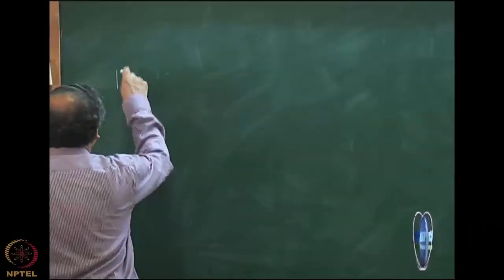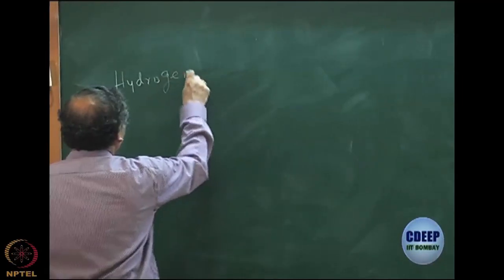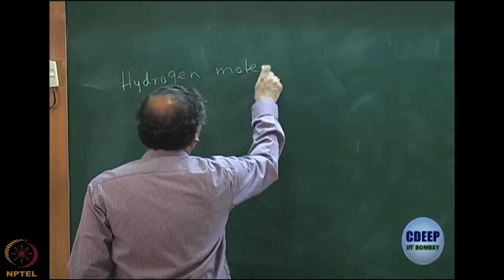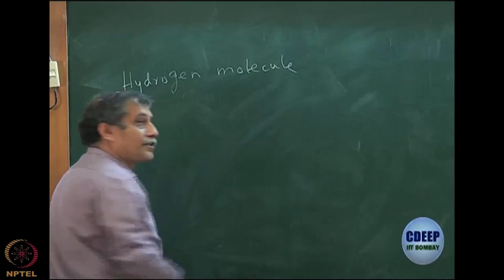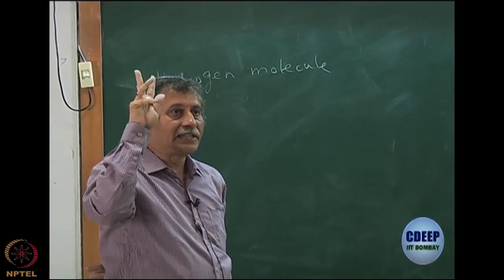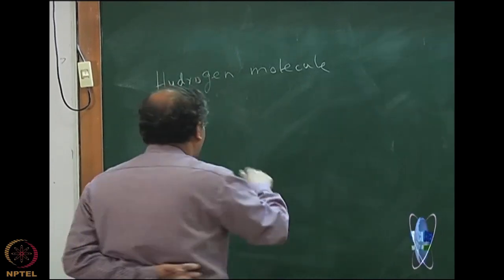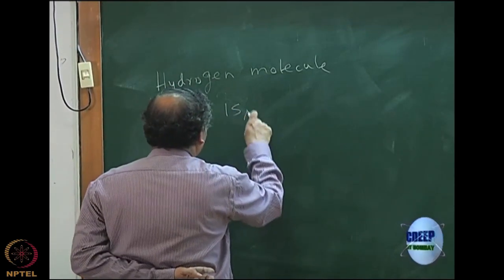I go back to hydrogen molecule. Hydrogen molecule is something that all of you have studied very well. Hydrogen molecule is two atomic orbitals. The simplest basis that you can think of - 1s_a and 1s_b.